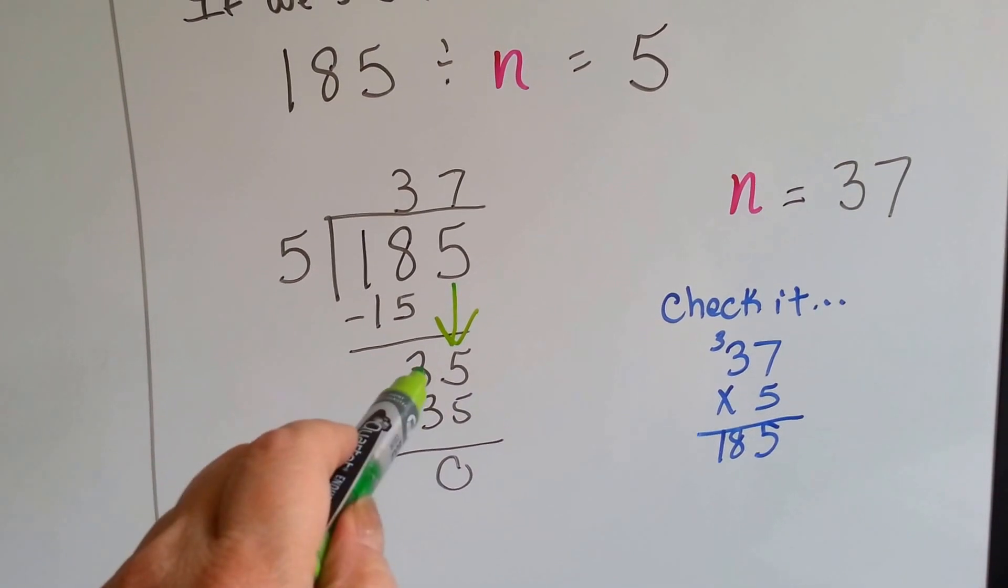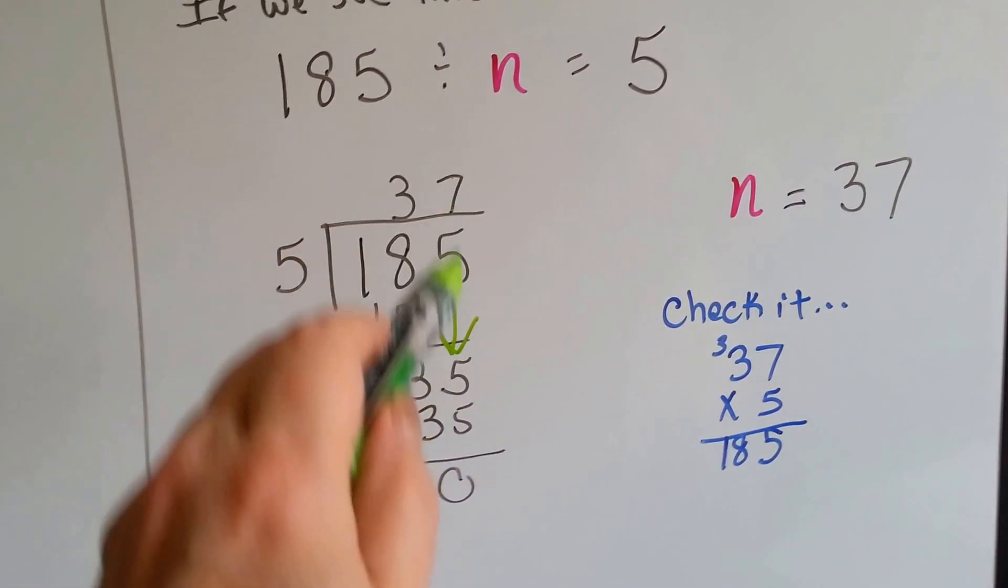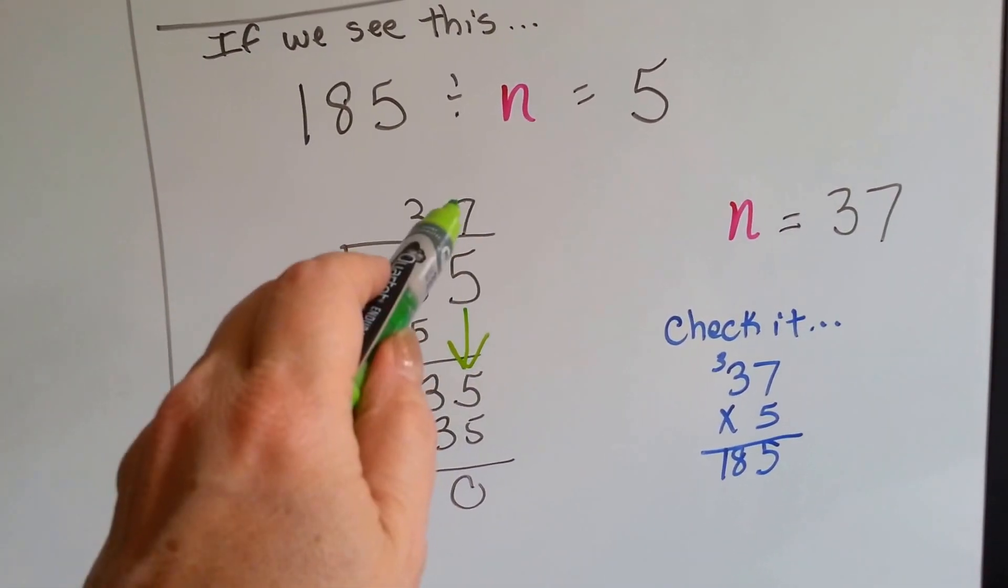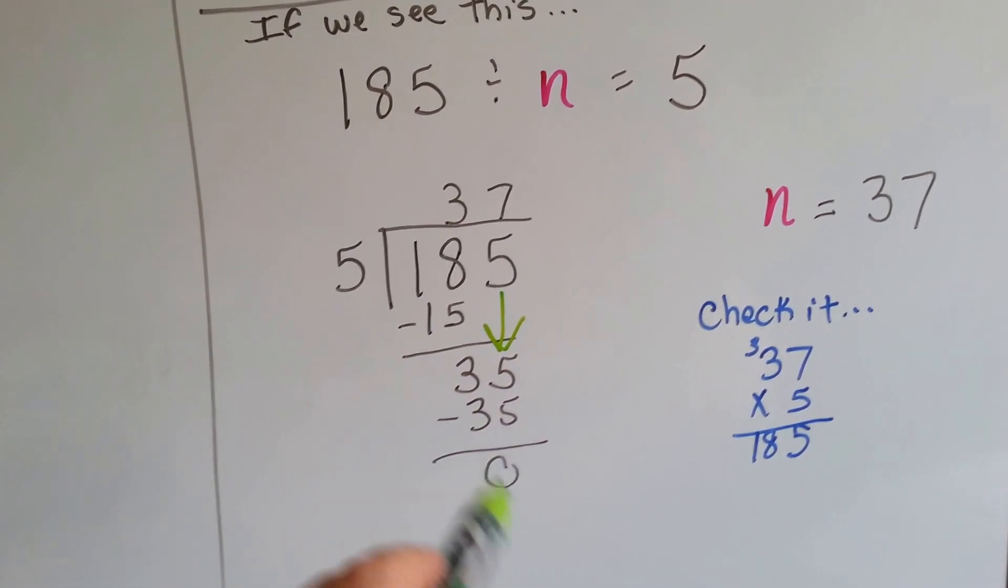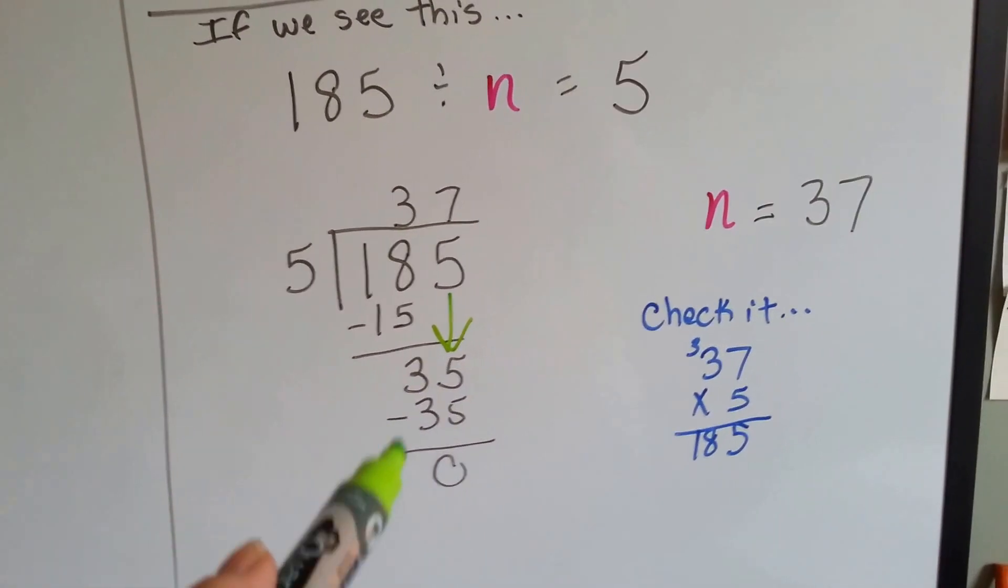How many times can 5 fit into 35? 7 times. And we put the answer above our 7. 5 times 7 is 35. We put it here and we get a remainder of 0. Then to check it, we do the same thing.